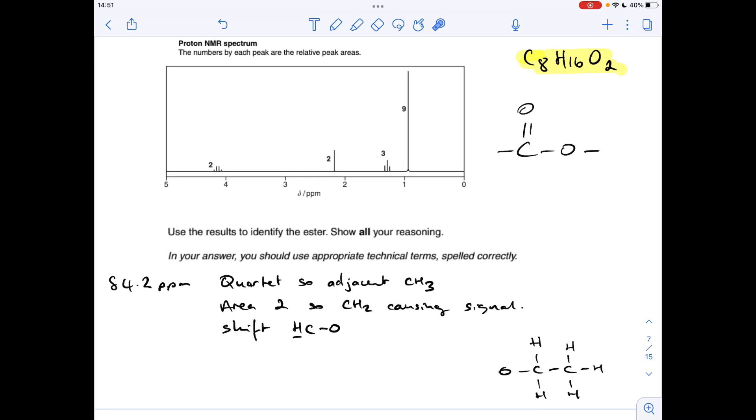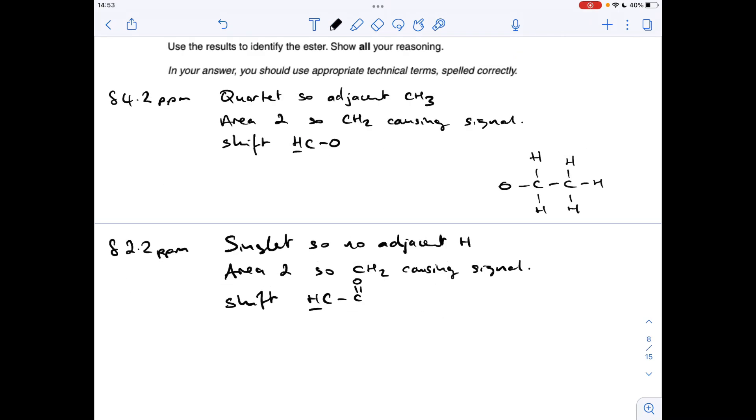And the shift is H to C to C double bond O, so H to C to that C double bond O. So just like before, we can draw up this little part of the molecule, so we know we've got 2 hydrogens on a carbon with no adjacent hydrogens.